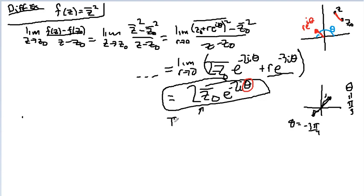This changes according to theta. In other words, you're going to get different values for the derivative if you approach from up here versus approach from there versus approach from there.